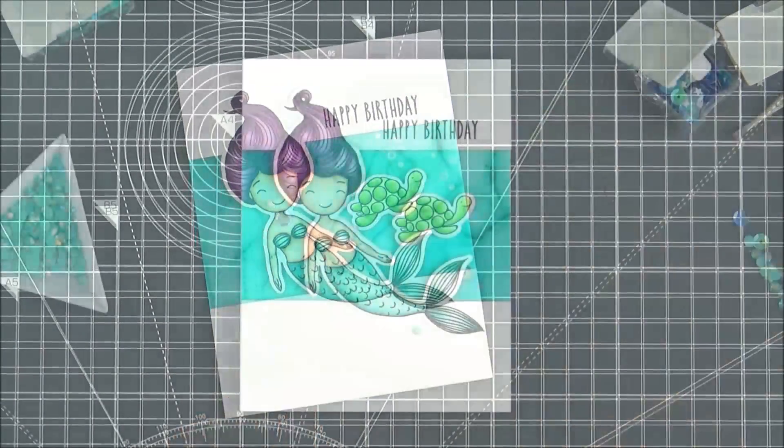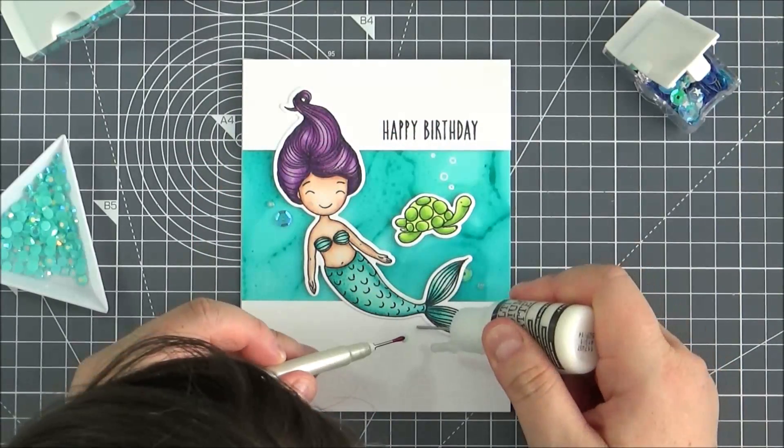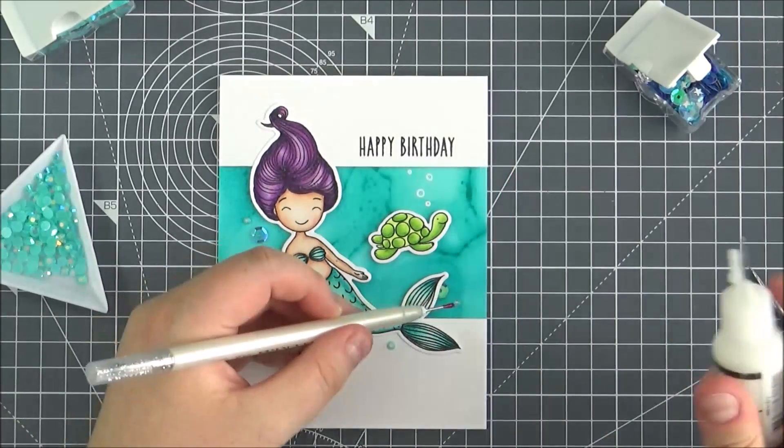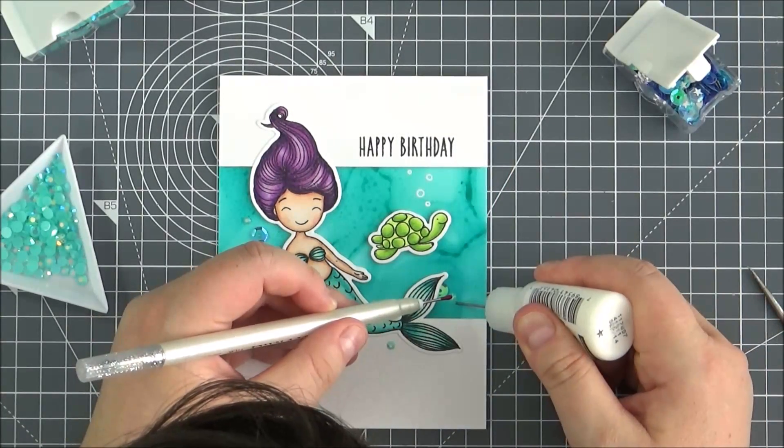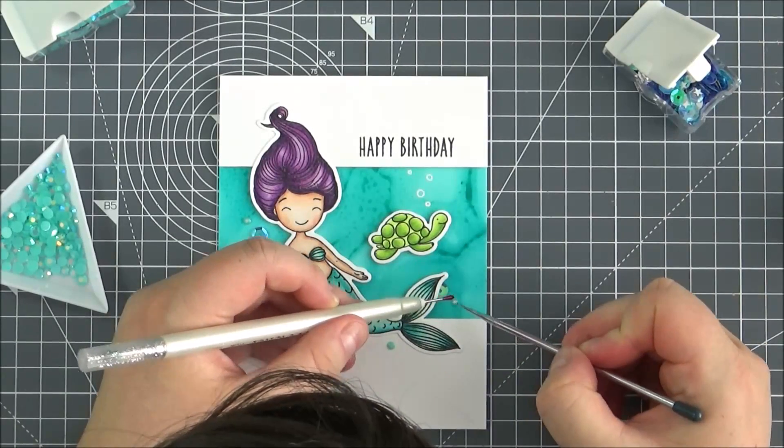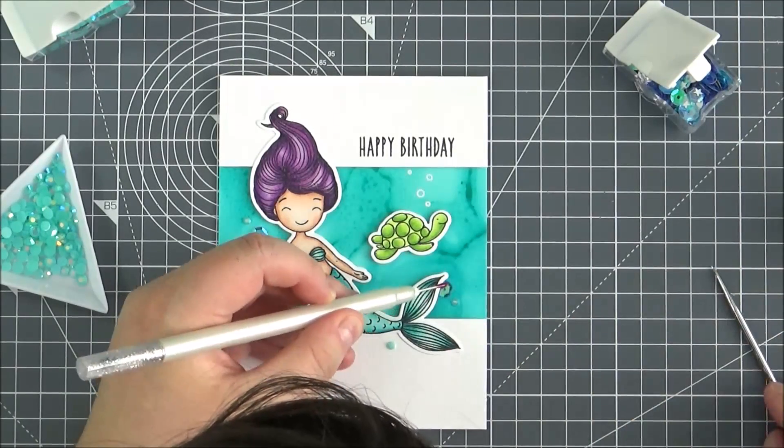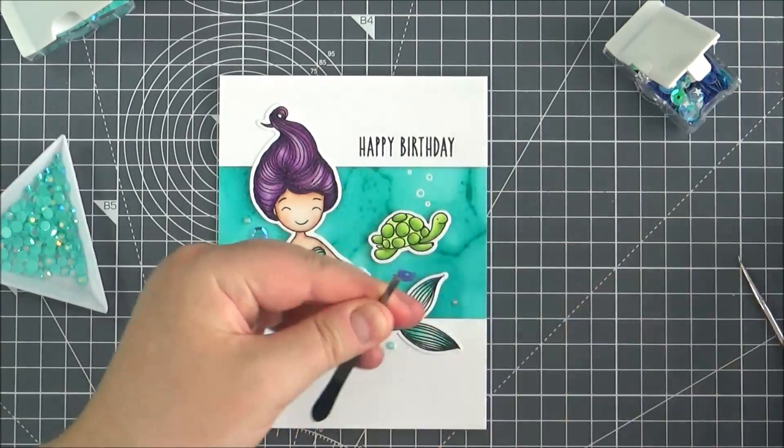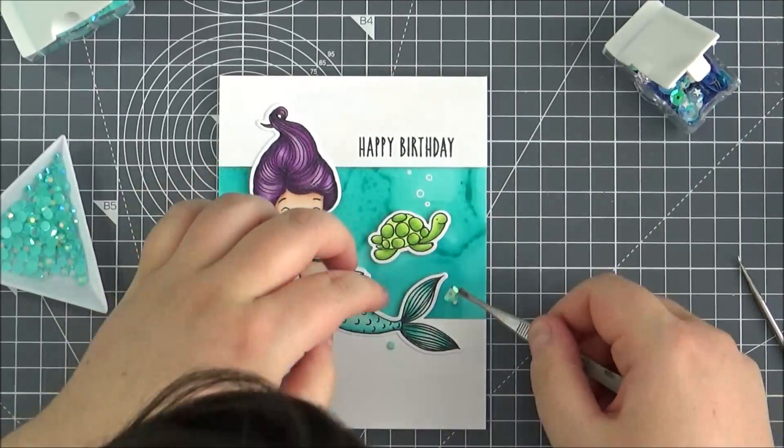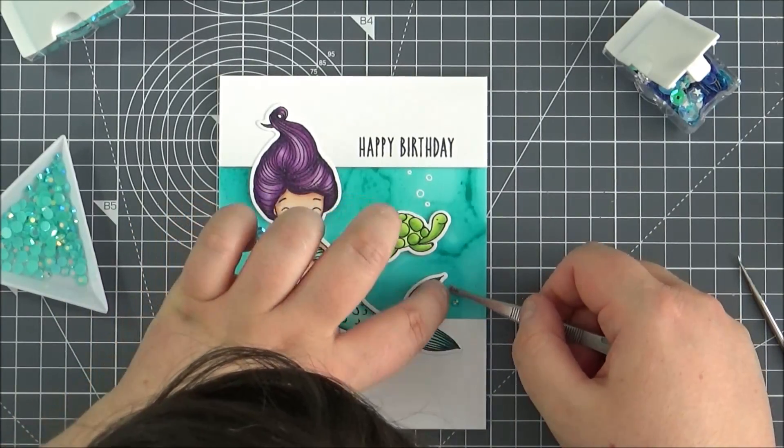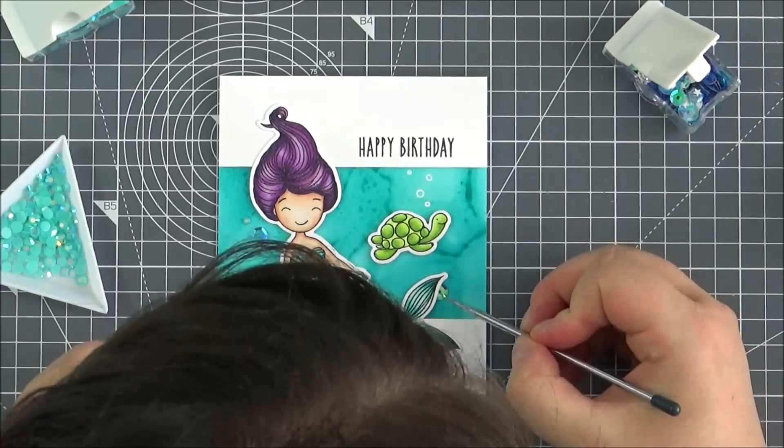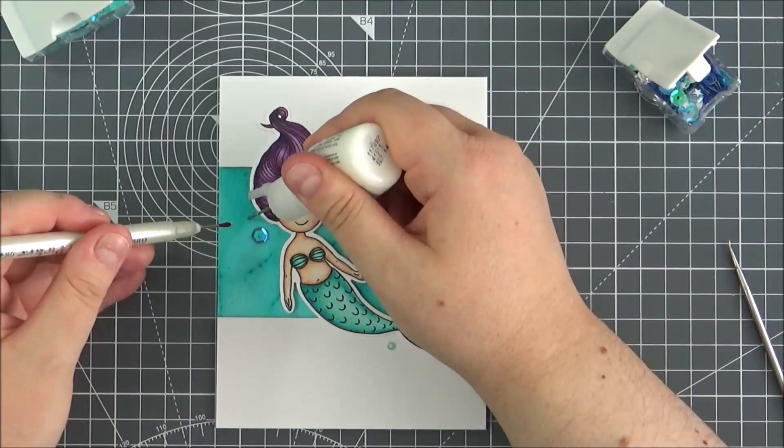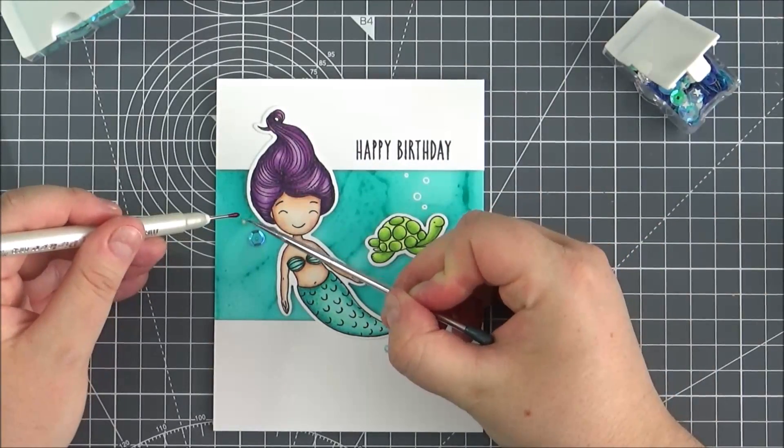To finish off, I'm adding some jewels using some shimmer pool jewels from Lucy's cards and a couple of sequins from the peacock sequins shaker selection. I'm using a pickup tool that works really well for jewels but doesn't work so well for sequins, although there's a thicker end on the other side. I tend to just pick those up with tweezers using a little bit of multi-medium mat to stick those down.